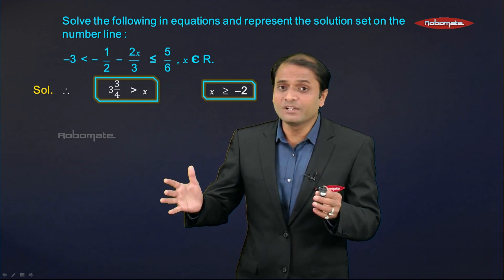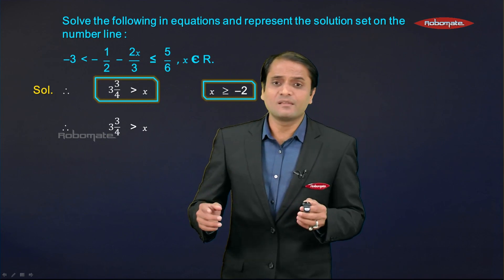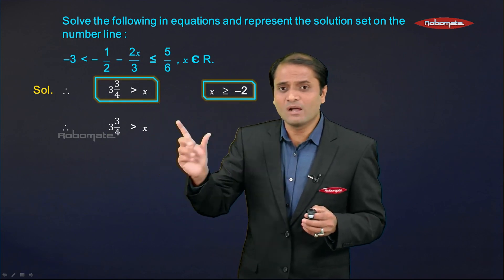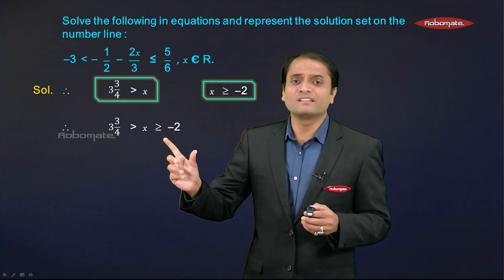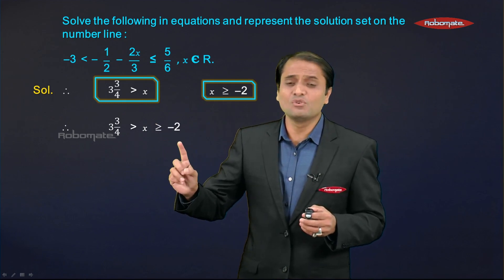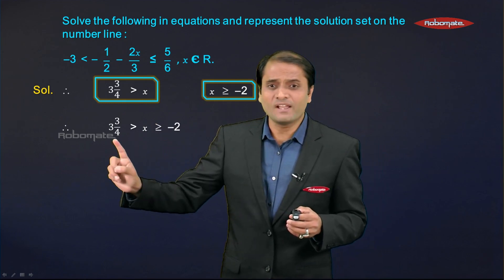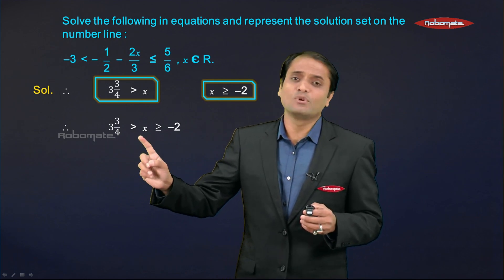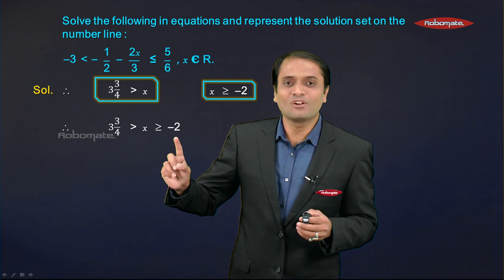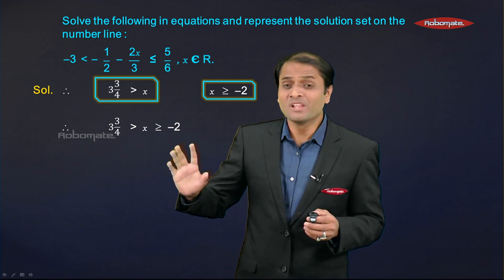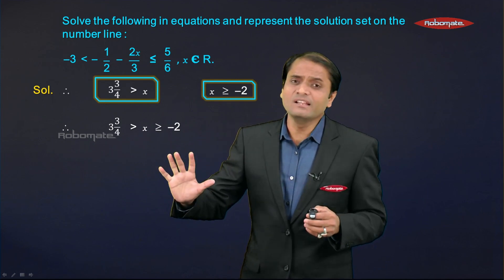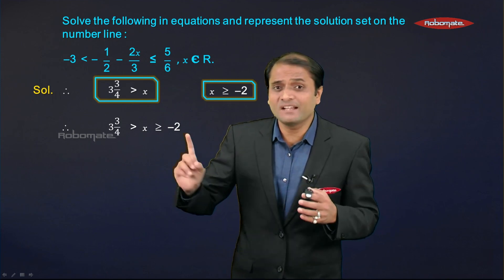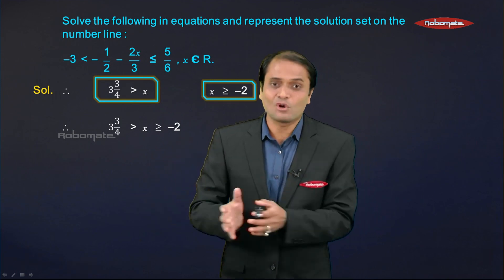Now we combine both inequations into the double linear inequation. From the first we have 3¾ > x, and from the second x ≥ −2. The final combined inequation is: 3¾ > x ≥ −2.